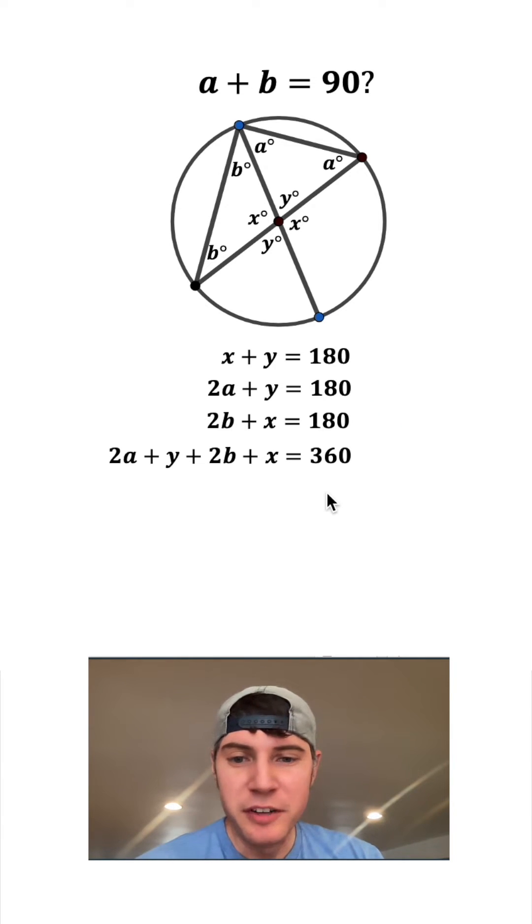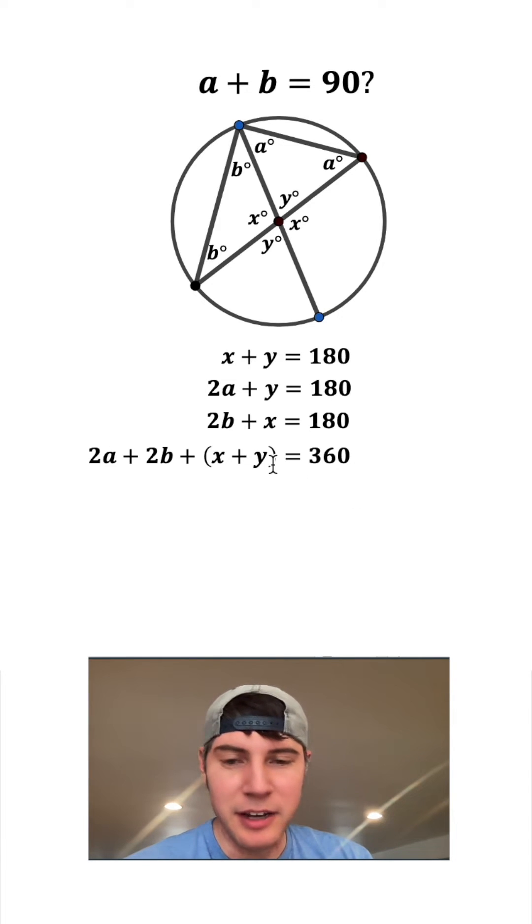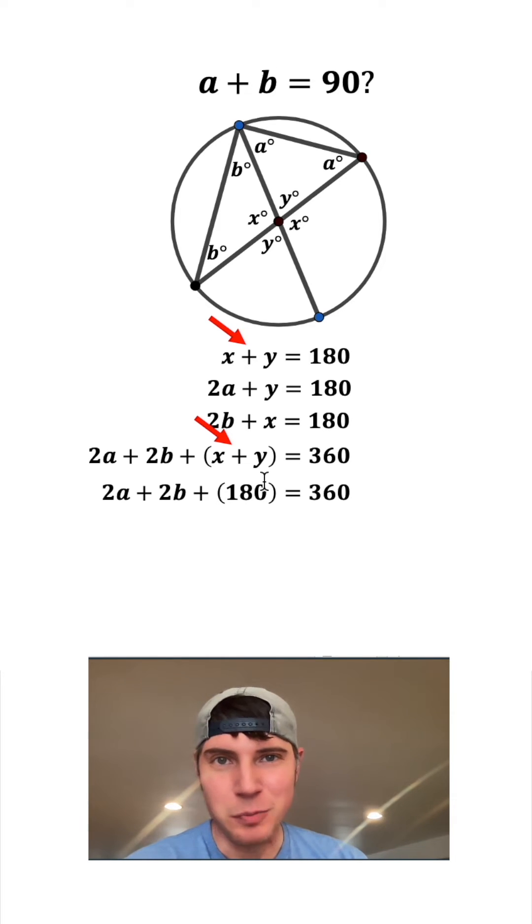We can clean this up. By the commutative property of addition, we can rearrange these. Put the X and Y together and we'll recognize that X plus Y is the same thing as this X plus Y. So we can plug in 180 for the X plus Y and then everything else is just brought down.